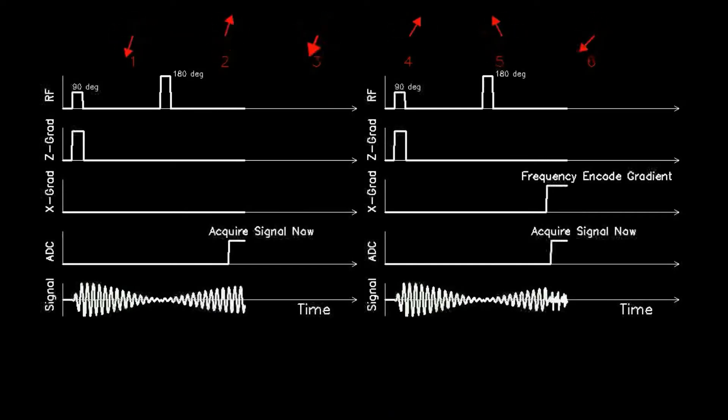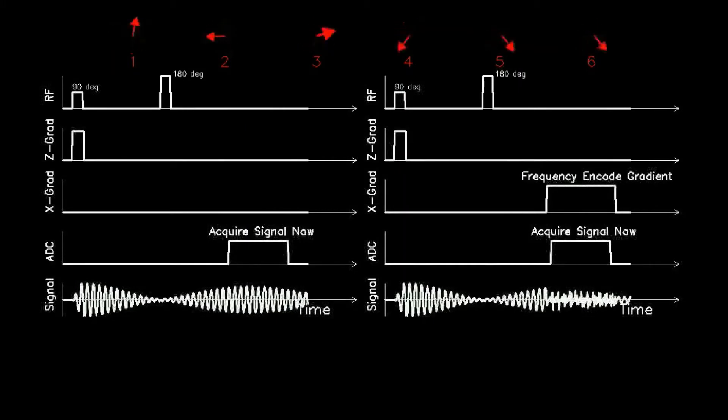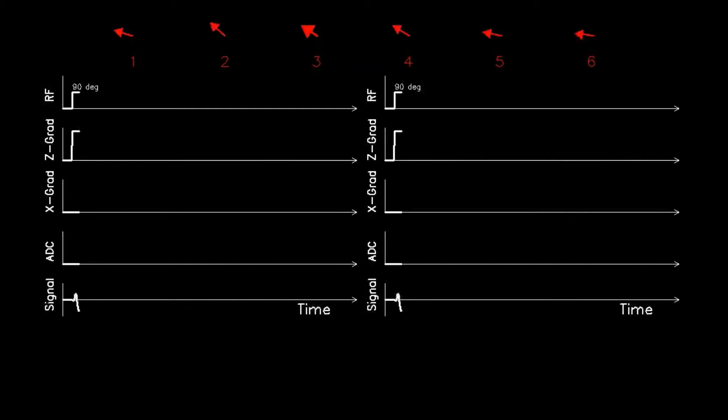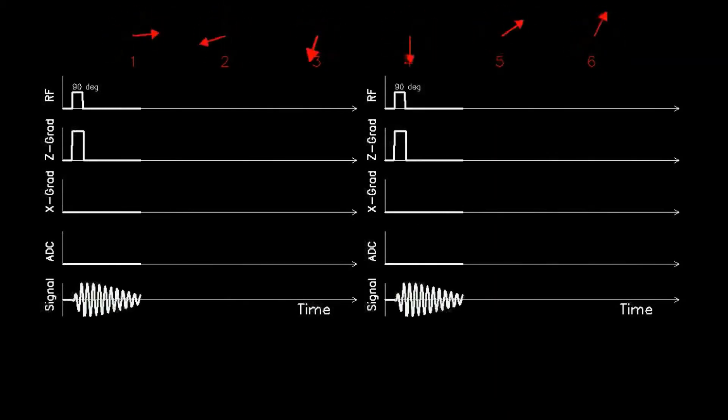Application of the gradient causes a slightly larger Z magnetic field towards the right-hand side and a slightly smaller Z magnetic field towards the left-hand side. This causes a known adjusted frequency change such that spins precess with a higher frequency to the right and a lower frequency to the left.